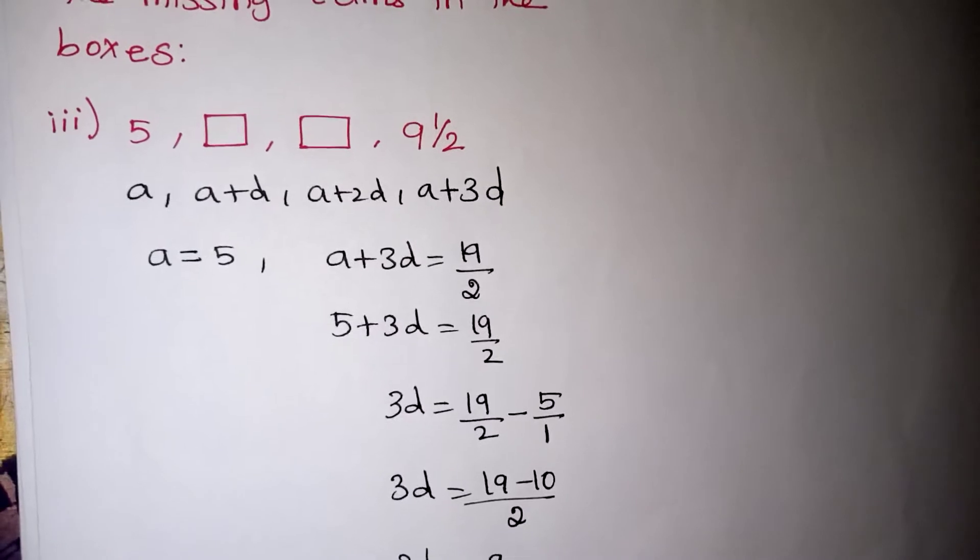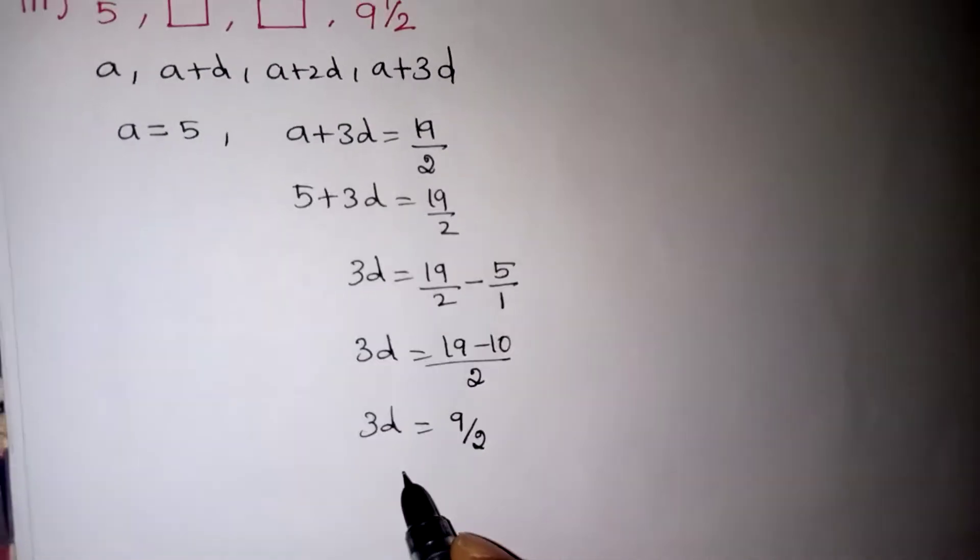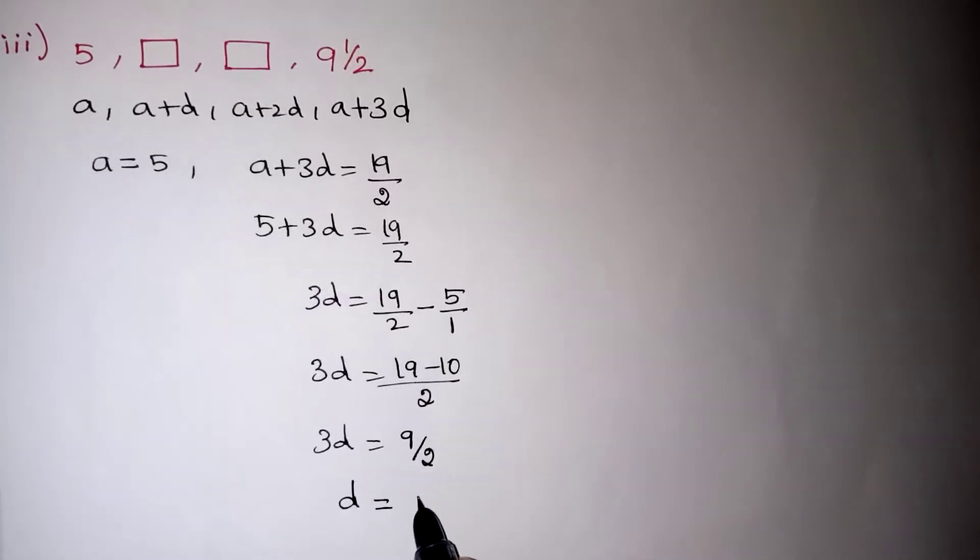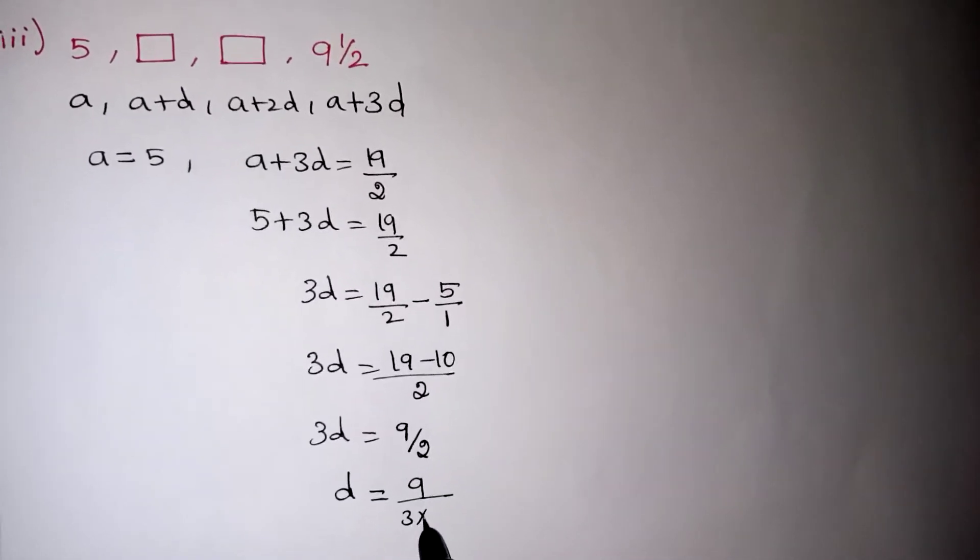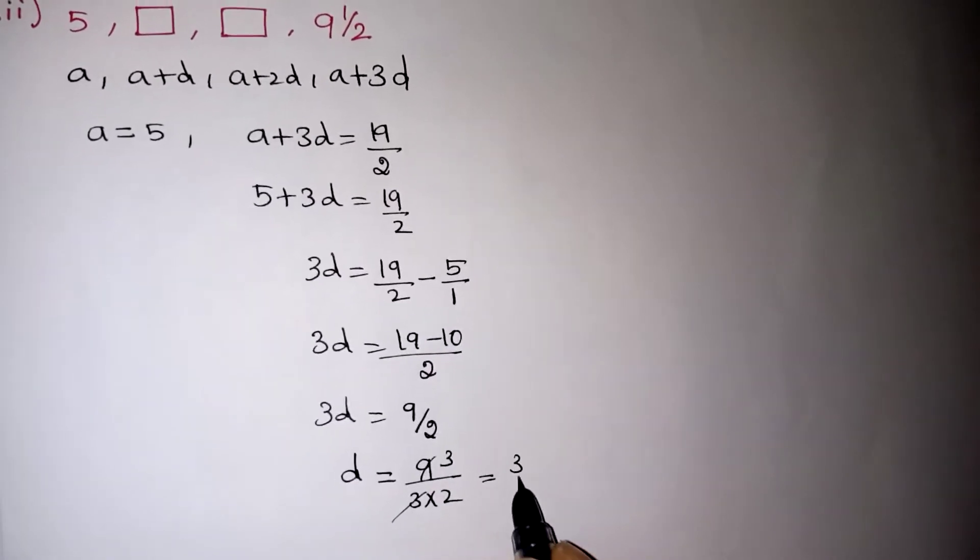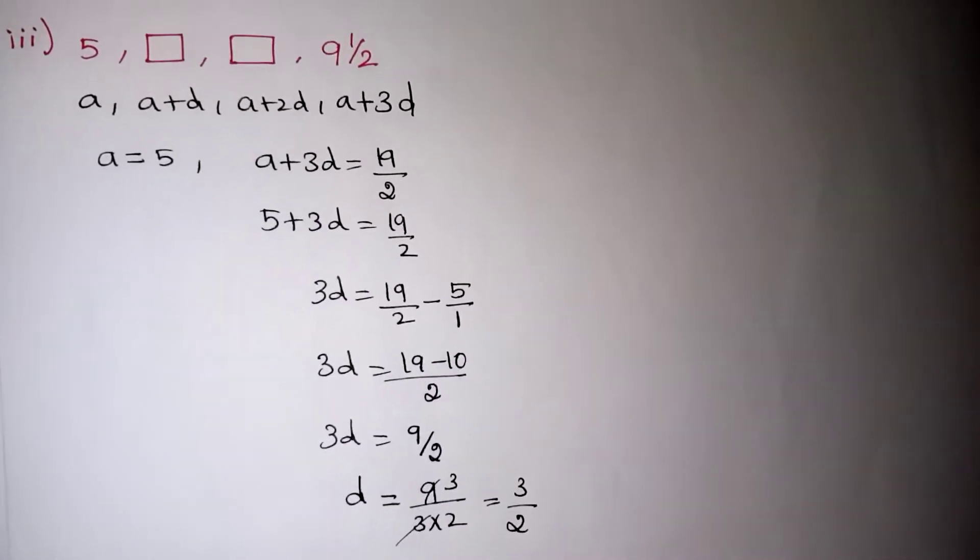So here 3D is equal to 9 by 2. So this multiplication 3, you can bring it to that side, that will become division. So D is equal to 9 by 3 into 2. Multiplication 3 will come down as division. This is 1, this is 3. So D value is 3 by 2. We got the D value.